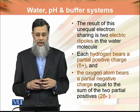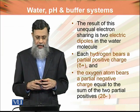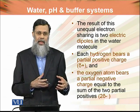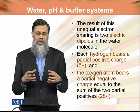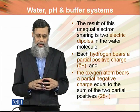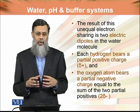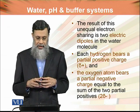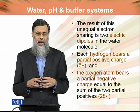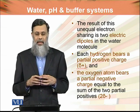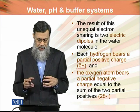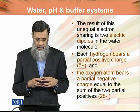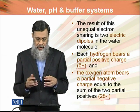The result of this unequal electron sharing is that the hydrogen atom bears a partial positive charge, which is denoted as delta positive, and the oxygen atom bears a partial negative charge, denoted as delta negative. This negative charge is equal to the sum of the two partial positive charges.